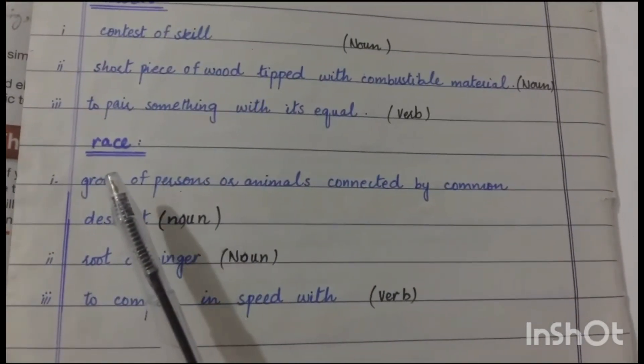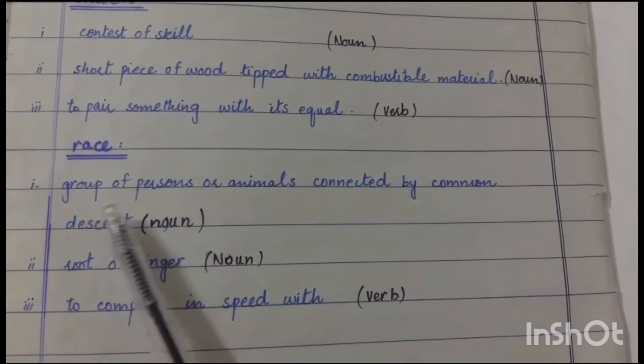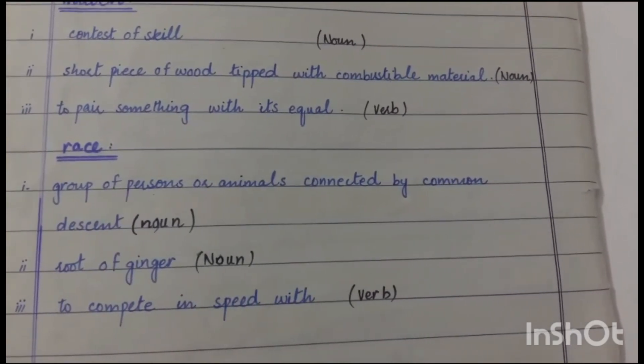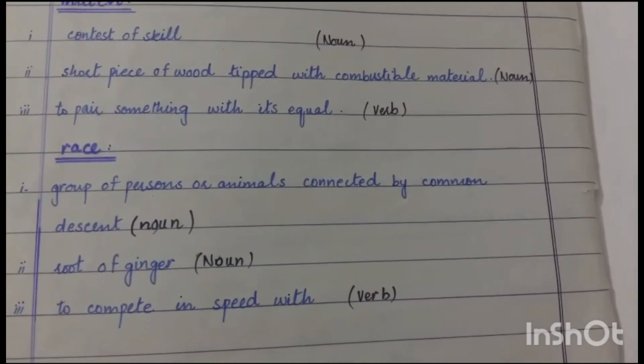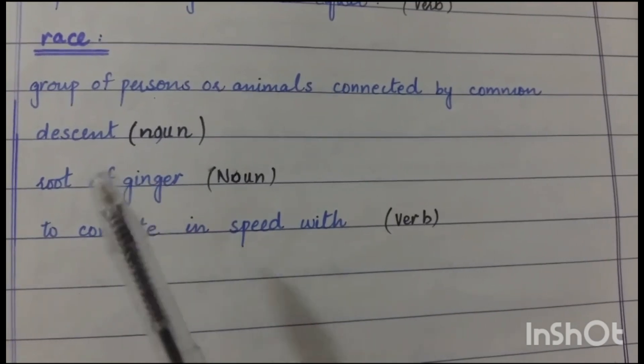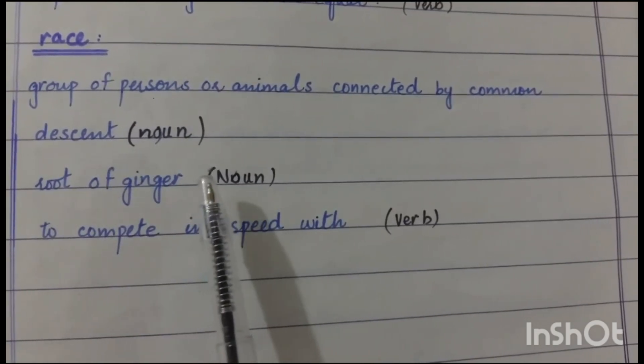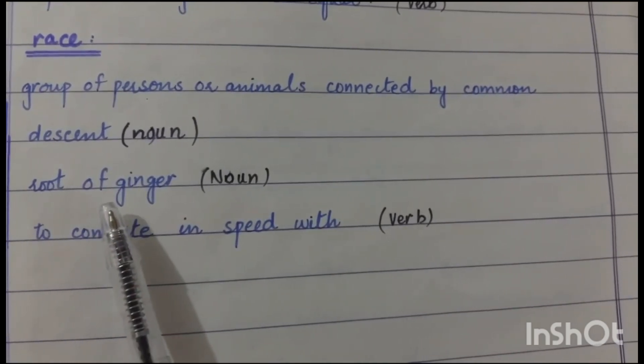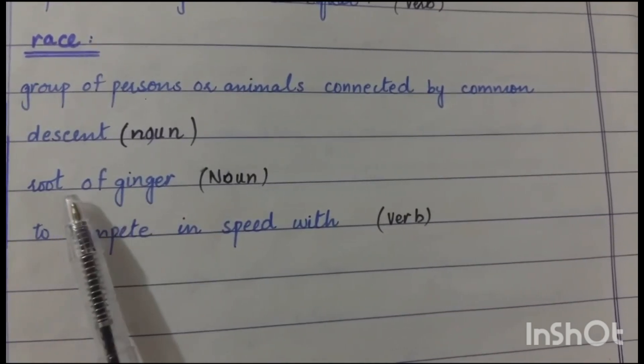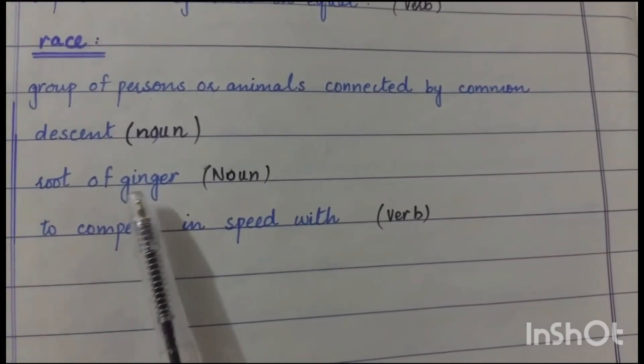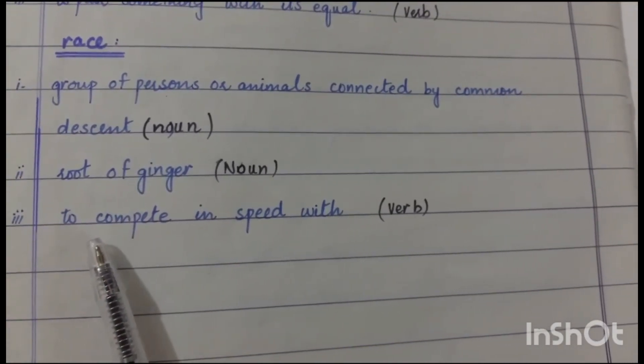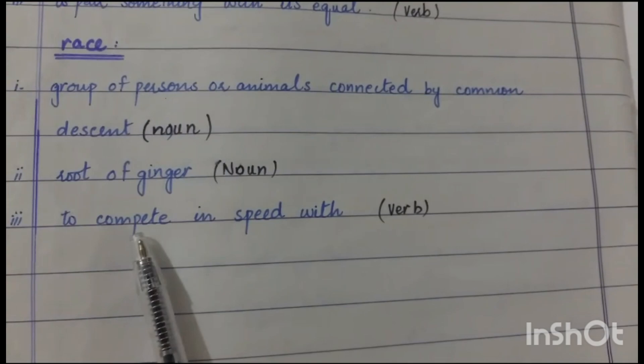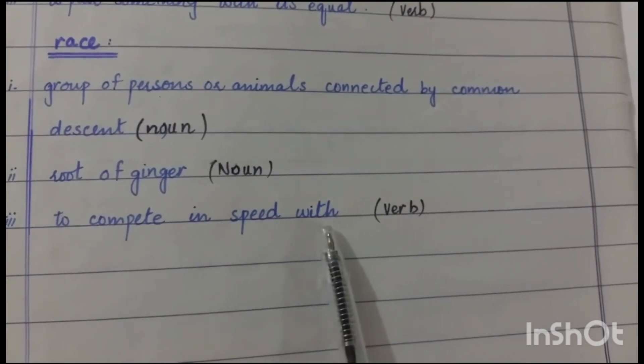Our last word is race. Group of persons or animals connected by common descent. Descent means the origin or background of someone. Race as a noun also means root of ginger. Race as a verb means to compete in speed with someone.